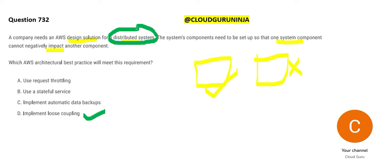That's why all real-time production systems use loose coupling. Now, what is request throttling? Throttling is like your bike engine — it can go to say 150 kilometers, and above that it starts throttling and may shake. But here throttling is not required — you decouple the components first.